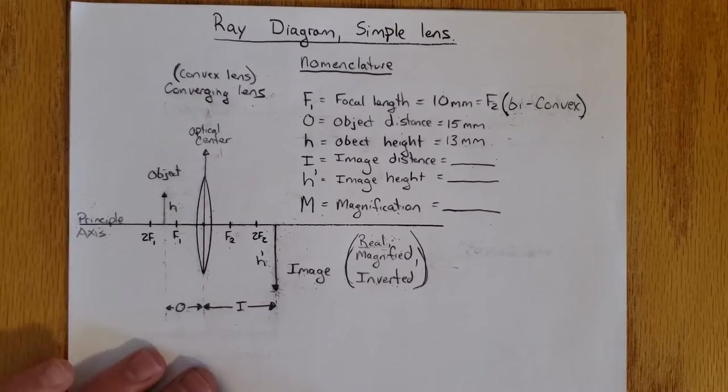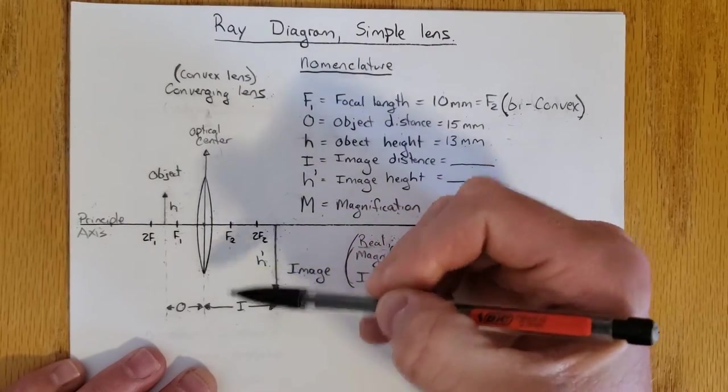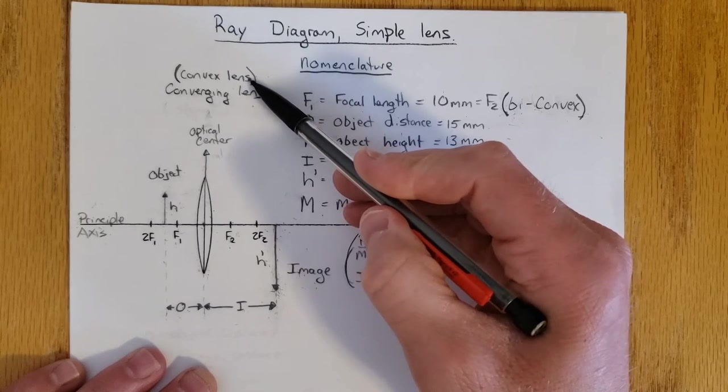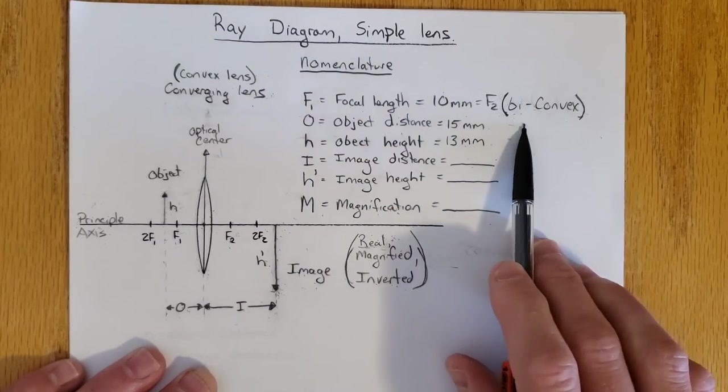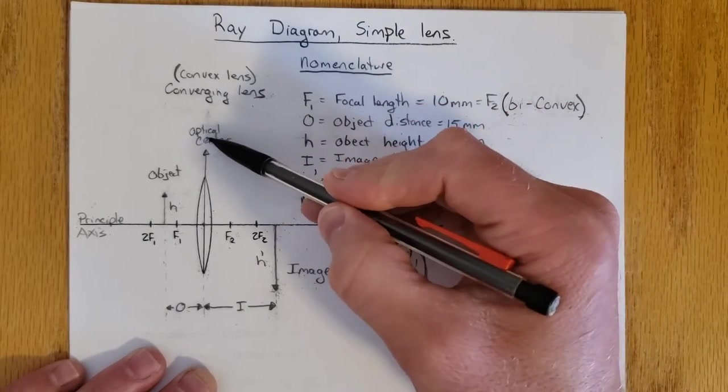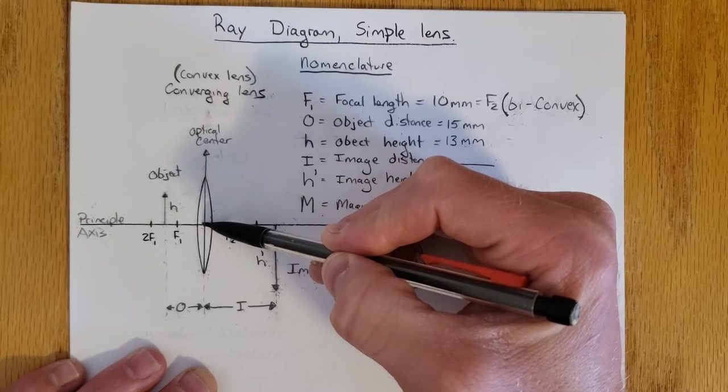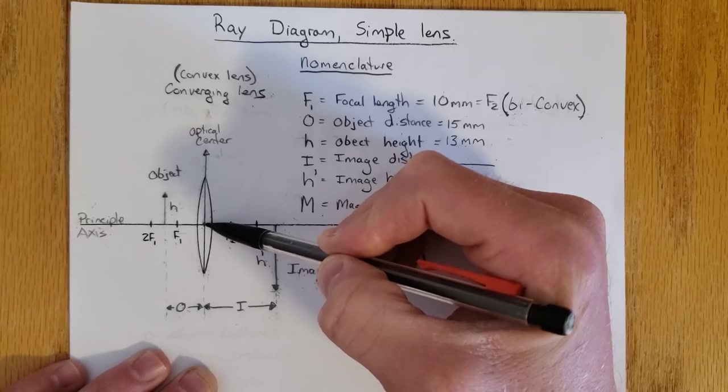Moving through the nomenclature, because this is bowed outwards, we call that a convex lens. Since it's bowed outwards on both the front and the back, we call that biconvex. A lot of people would call this a converging lens. The optical center of this lens where it crosses the principal axis is where we're going to draw a lot of our lines through.